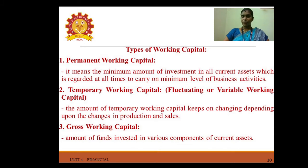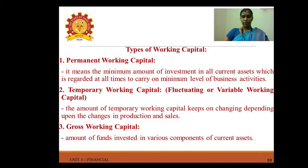Temporary or fluctuating working capital is the amount that keeps changing depending upon changes in production and sales. Gross working capital is the amount of funds invested in various components of current assets — cash, stock, receivables, and securities.